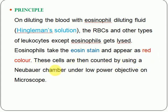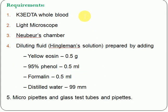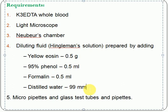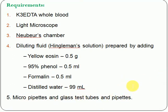These red-colored cells are counted under the low power objective of a microscope using the Neubauer counting chamber. The requirements for performing absolute eosinophil count are: K3 EDTA whole blood, a light microscope, a Neubauer chamber, and Hinkelmann solution as diluting fluid. The composition of Hinkelmann solution is: yellow eosin 0.5 g, 95% phenol 0.5 ml, formalin 5 ml, and distilled water 99 ml.